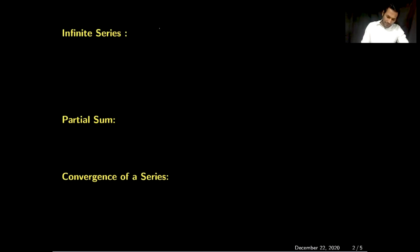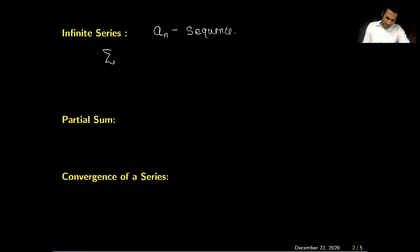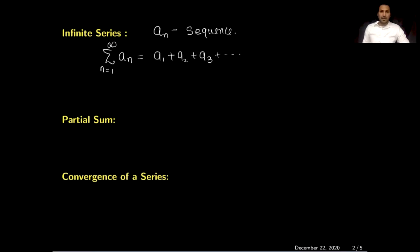Suppose we have a sequence a_n. We can construct an infinite series by adding the terms of the sequence — varying from the very first term to the very last (infinite) term. In other words, if you add a1 + a2 + a3 and so on, this sum is called an infinite series.